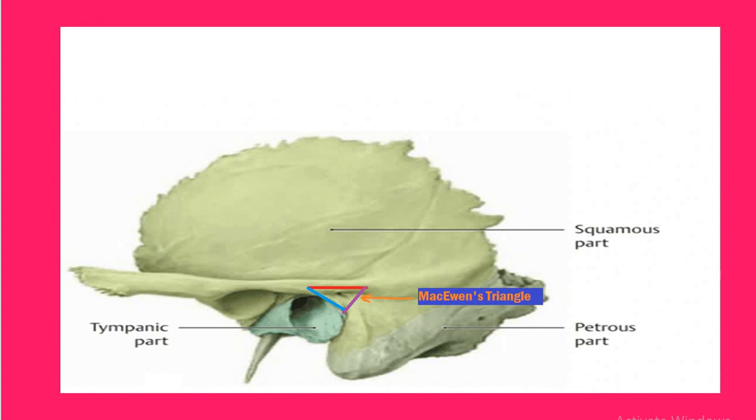The superior boundary is the posterior prolongation of upper border of root of zygoma. You can see here this is the zygoma, this is the root, and this is the posterior prolongation. Some textbooks even mention the supra-mastoid crest or the inferior temporal line as the upper boundary of McEwan's Triangle. So if you are asked in the exam about the upper boundary, you can mention posterior prolongation of root of zygoma, supra-mastoid crest, or inferior temporal line.